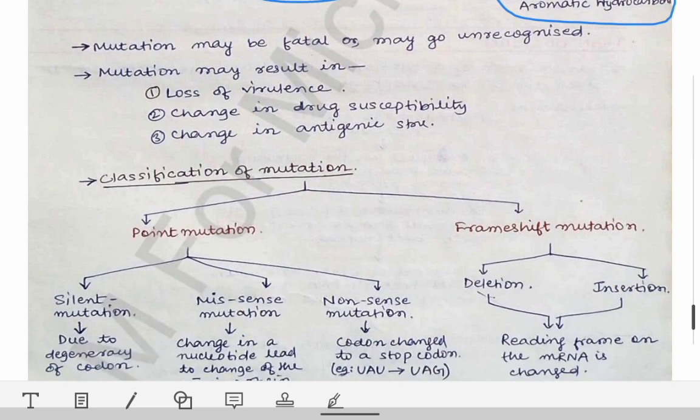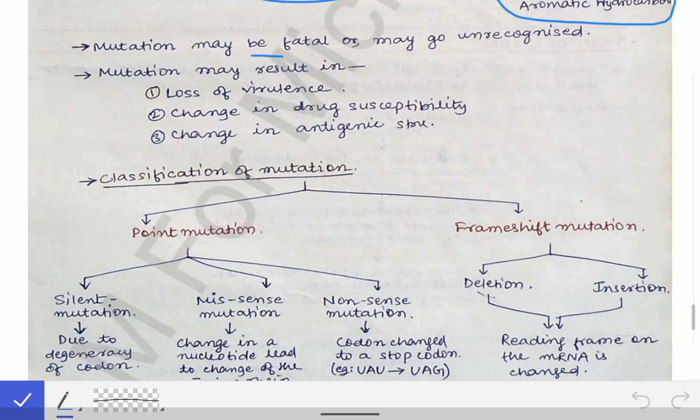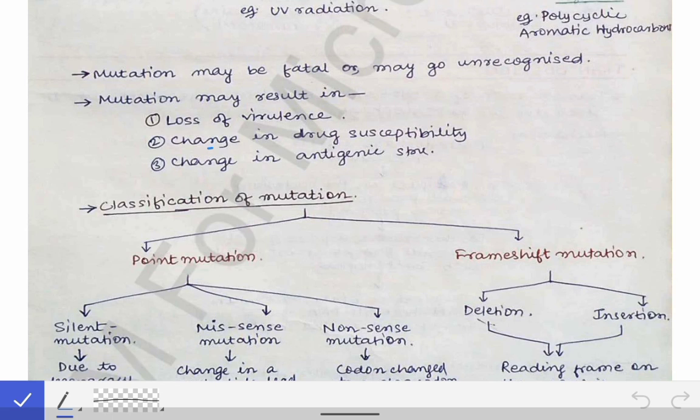One important point is that a mutation may be fatal to the bacterium or may go unrecognized. Mutation may result in loss of virulence, a change in drug susceptibility — meaning a bacterium may become resistant or susceptible to an antimicrobial agent after mutation, going in either direction — and it may also result in a change in the antigenic structure of the bacterium.